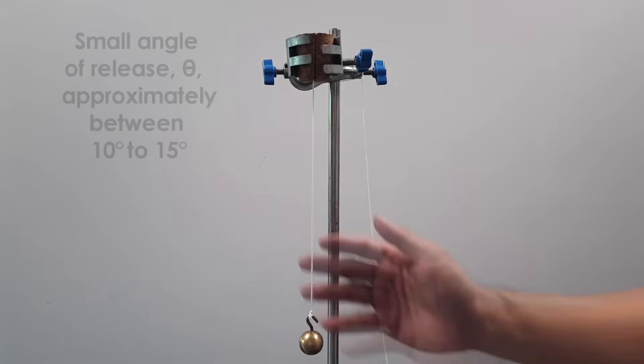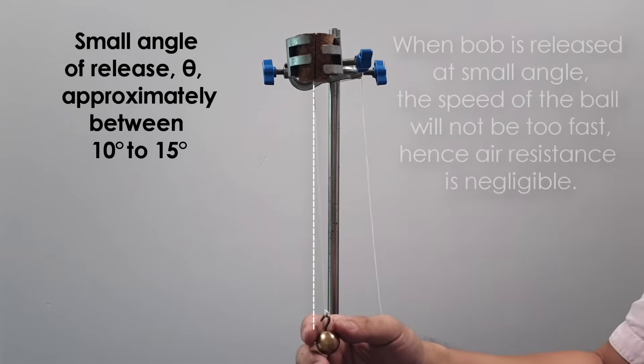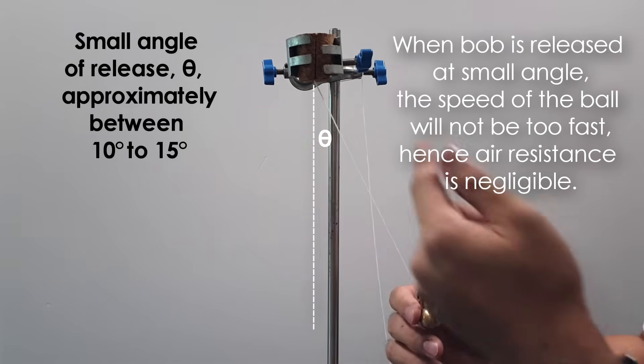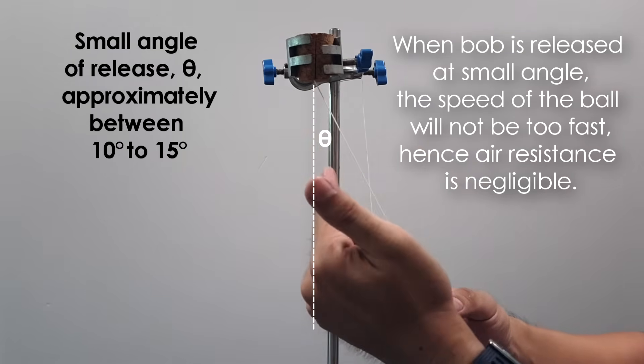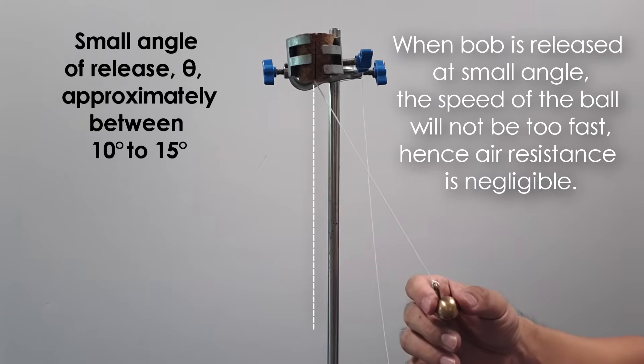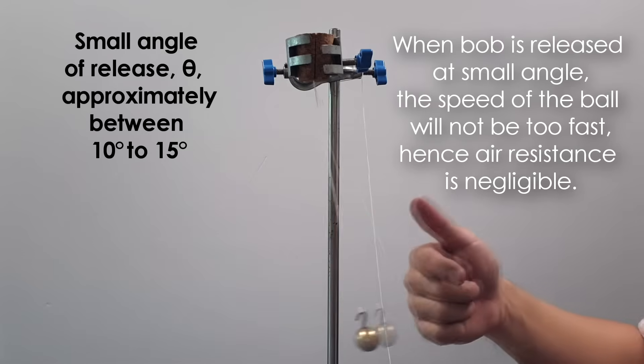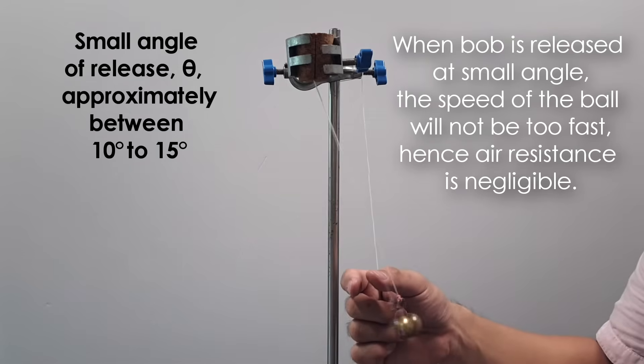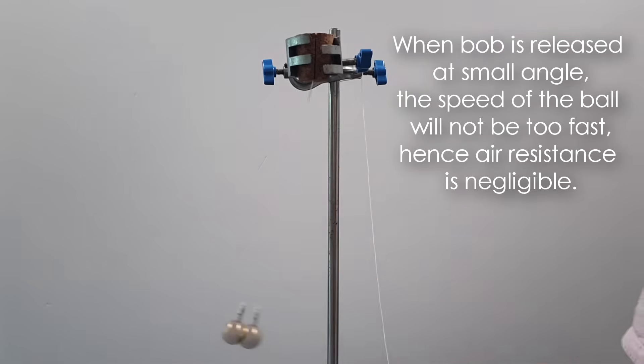The next thing is about the angle of release. It has to be a small angle, so approximately 10 to 15 degrees. That will do. Whether you release at 10 or 11 degrees, it doesn't make any difference to the time taken for the oscillation or the period. Why does it have to be small angles? Because if it's a small angle, the speed of the pendulum bob will not be too fast.